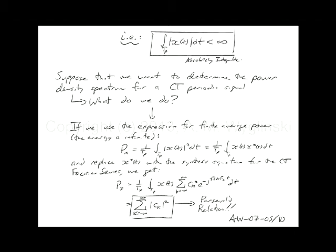We're going to see it four times in tonight's lectures. The first one: let's find what the average power is. We use power because energy is infinite for a periodic signal — it's not constrained to a single period. We need to look at a single period and ask what is the power in that period. If it's aperiodic, energy is fine. If it's periodic and goes on forever, energy just blows up.